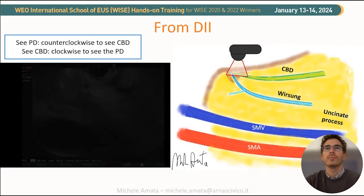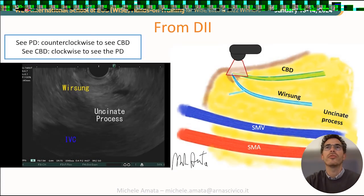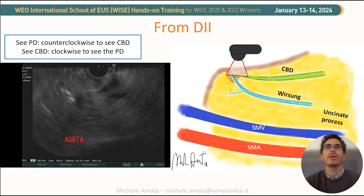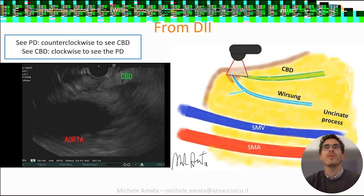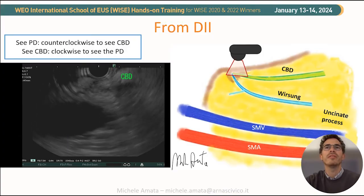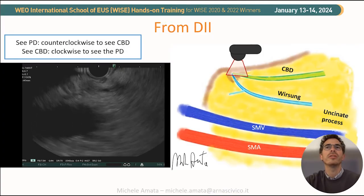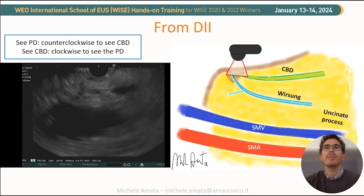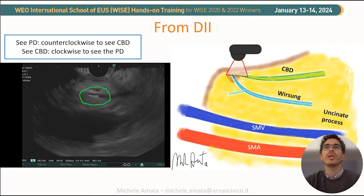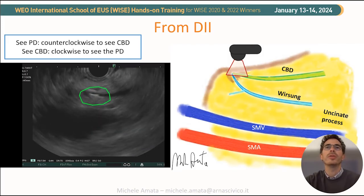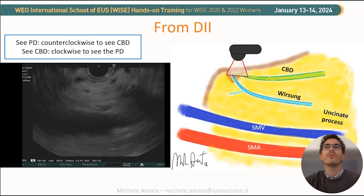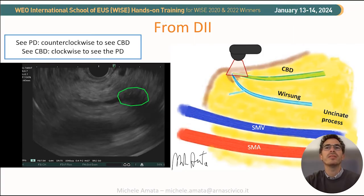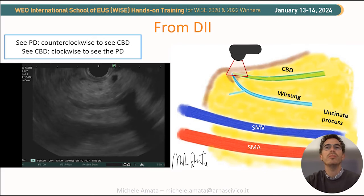Similarly, in this clinical case we interrogate the uncinate process and trace the Wirsung coming into the papilla. Moving counterclockwise, we see the CBD, and avoiding too much pressure on the tip, it was possible to see hyperechoic images with shadowing inside the CBD, compatible with stones. Continuing the withdrawal, we evaluate the entire bile duct system, also in the medium and proximal portion of the biliary tree.